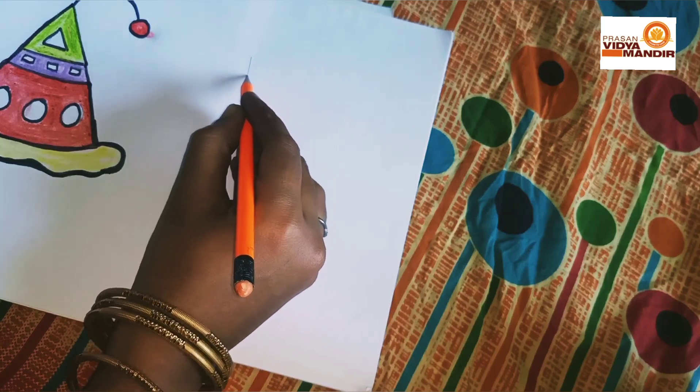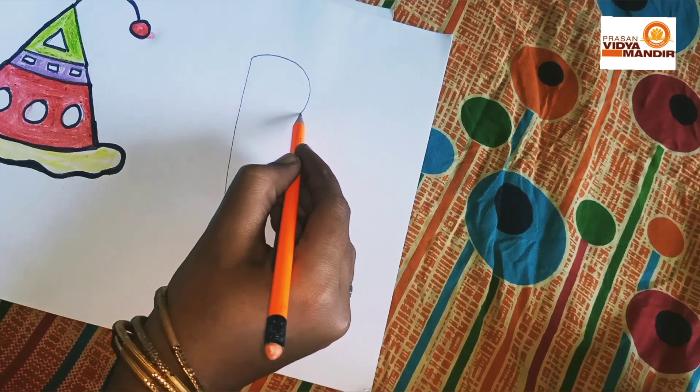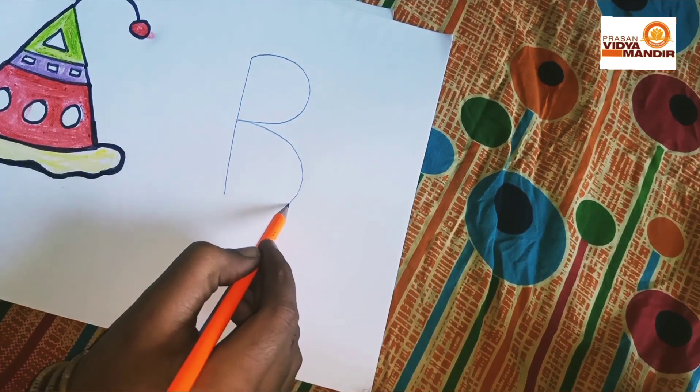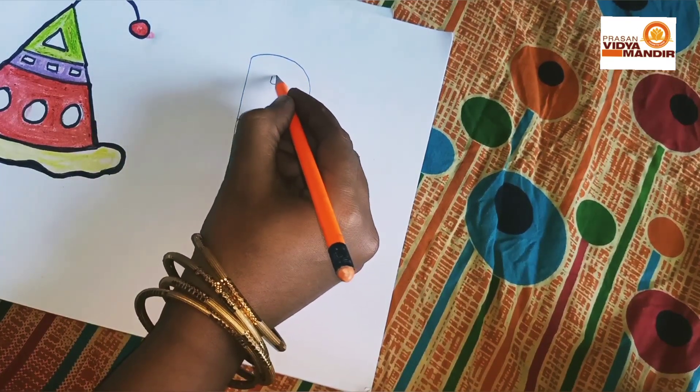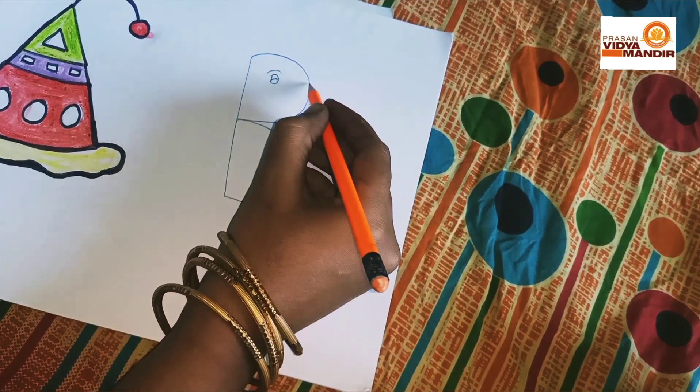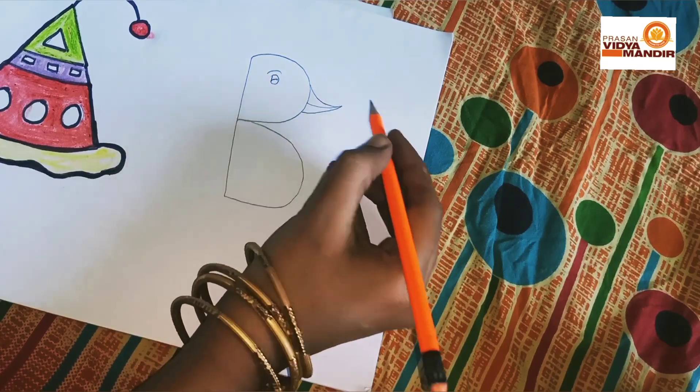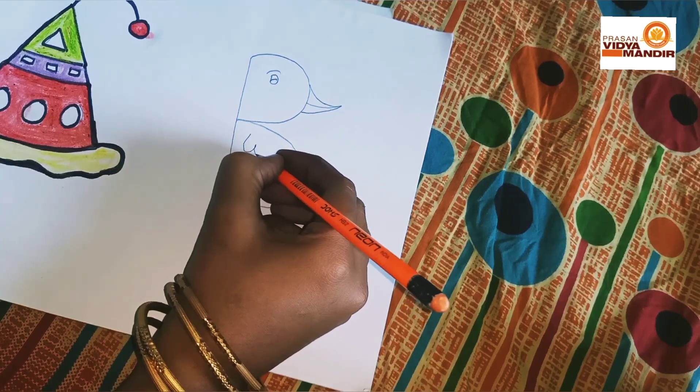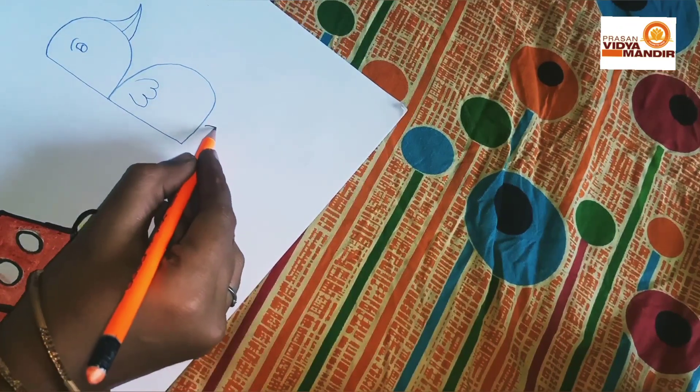Next write the letter B like this. Draw the eyes first. Then draw the nose of the bird like this. Then using number 3 to draw hand and leg for the bird like this.